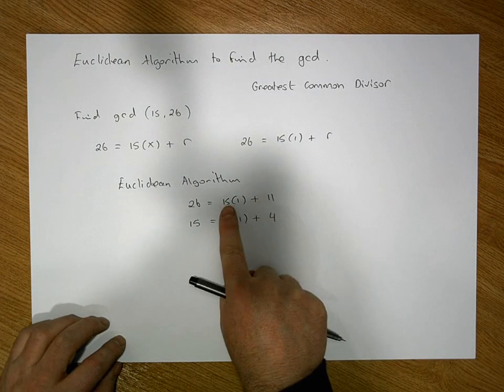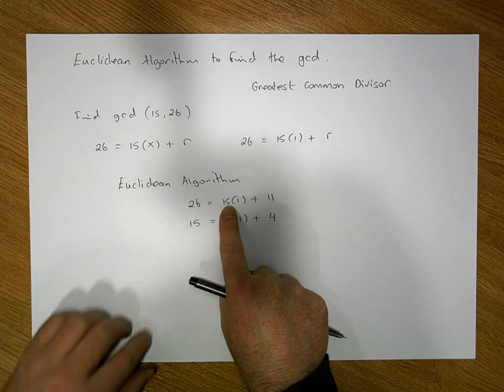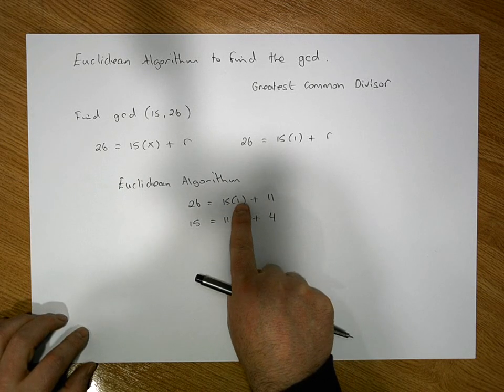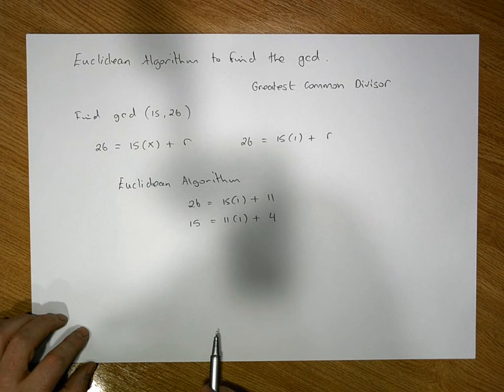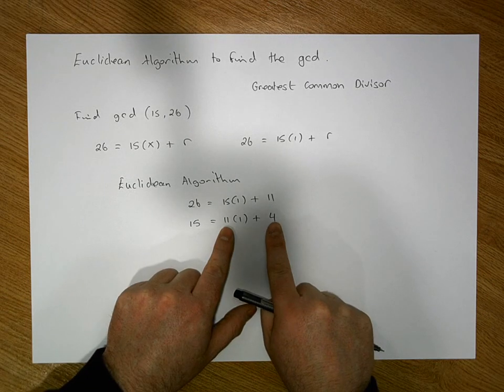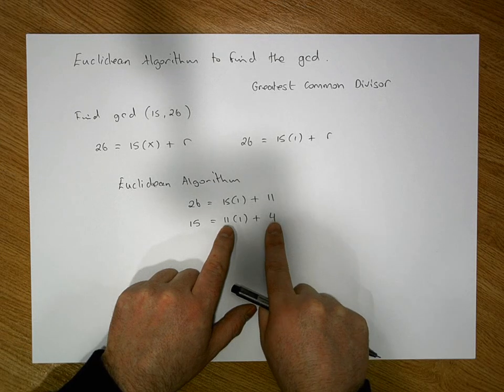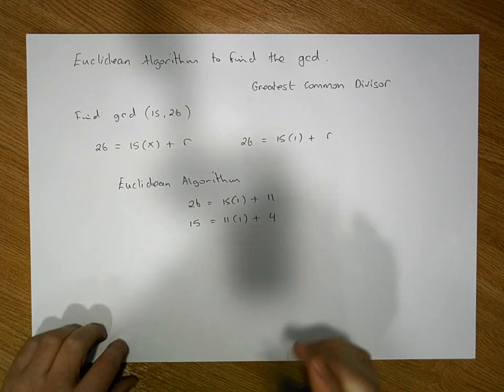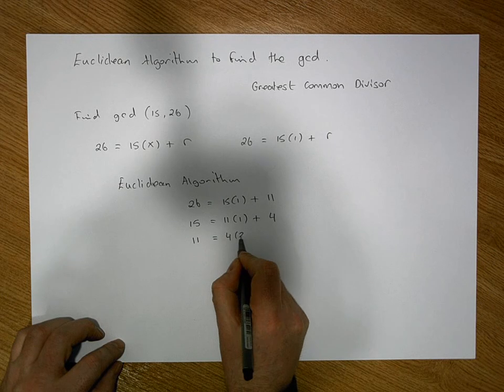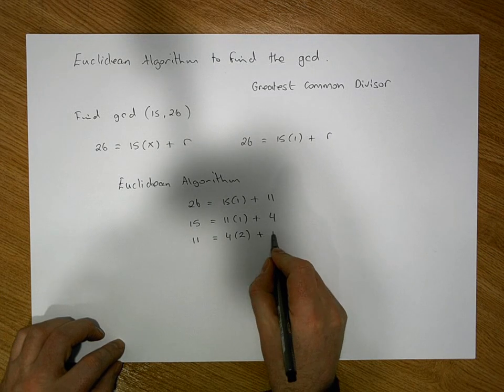We know this remainder is always going to be less than our original number because it is a remainder. If it wasn't, it would have divided in another number of times. Once we've done the second pass, the next thing is looking at 11 and 4. How many times does 4 divide into 11? Well, we have 11 is equal to 4 times 2, it divides in twice, plus a remainder of 3.